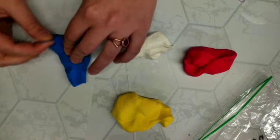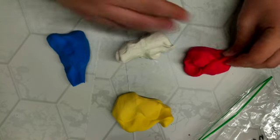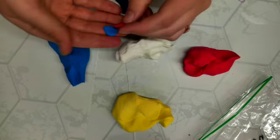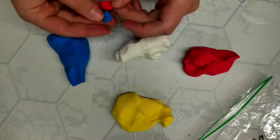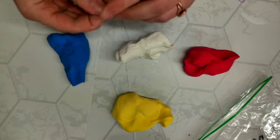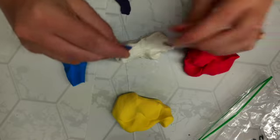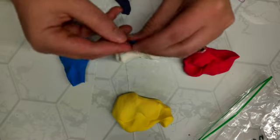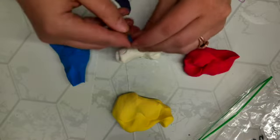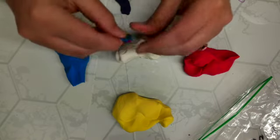So I would just take off a little bit of red, a little bit of blue, stick them together, and then just pinch, pinch, pinch until it turns purple. You kind of have to work those two colors together. Eventually it will turn purple.